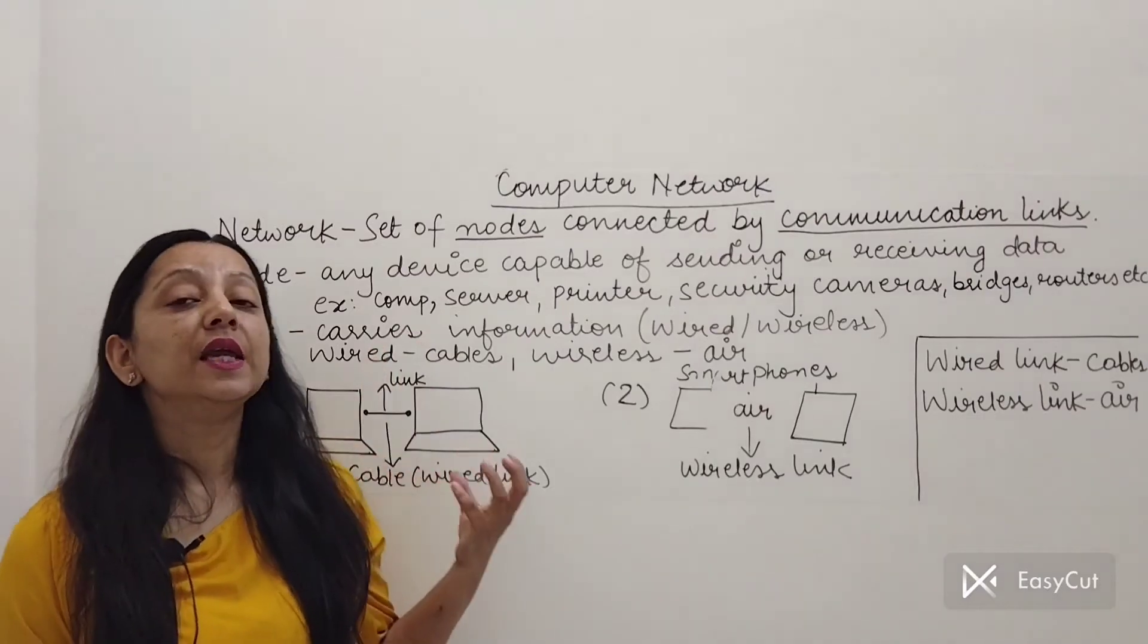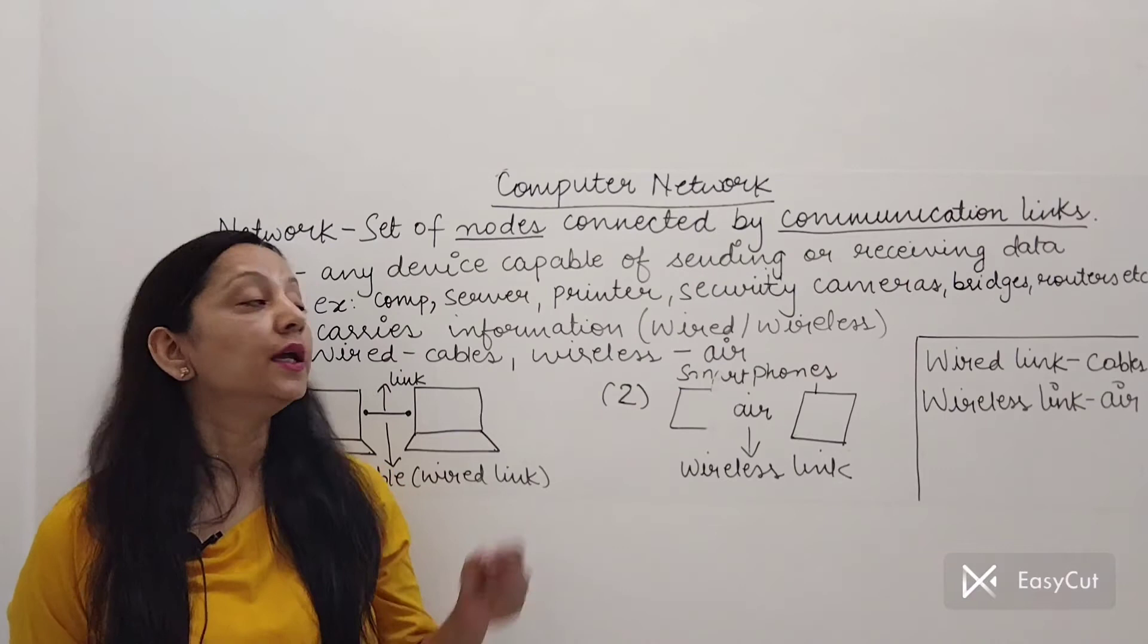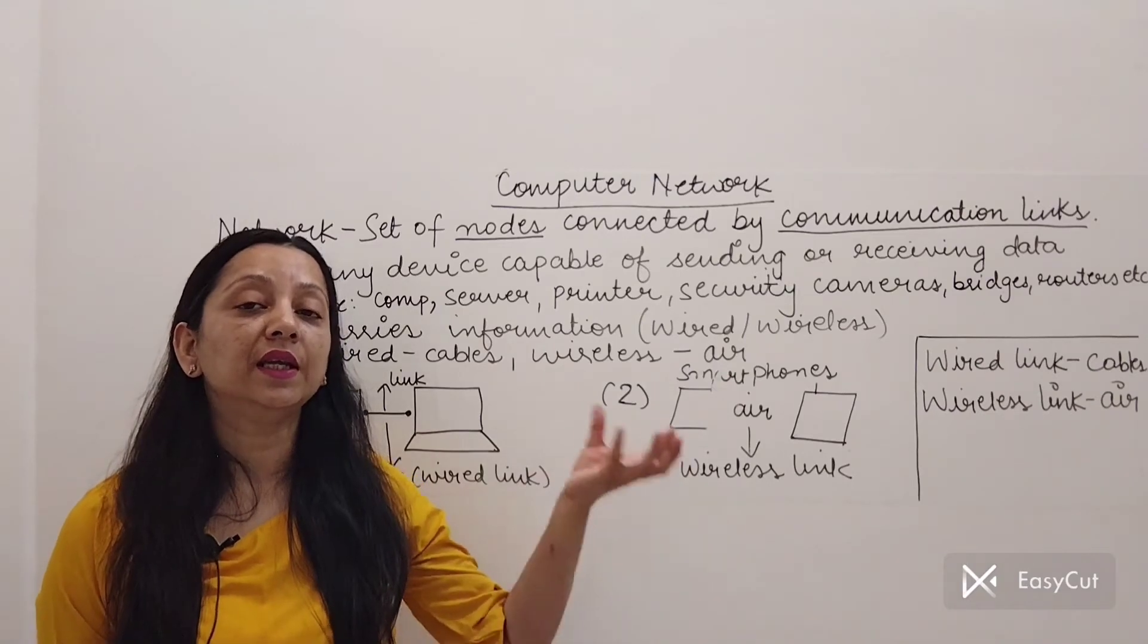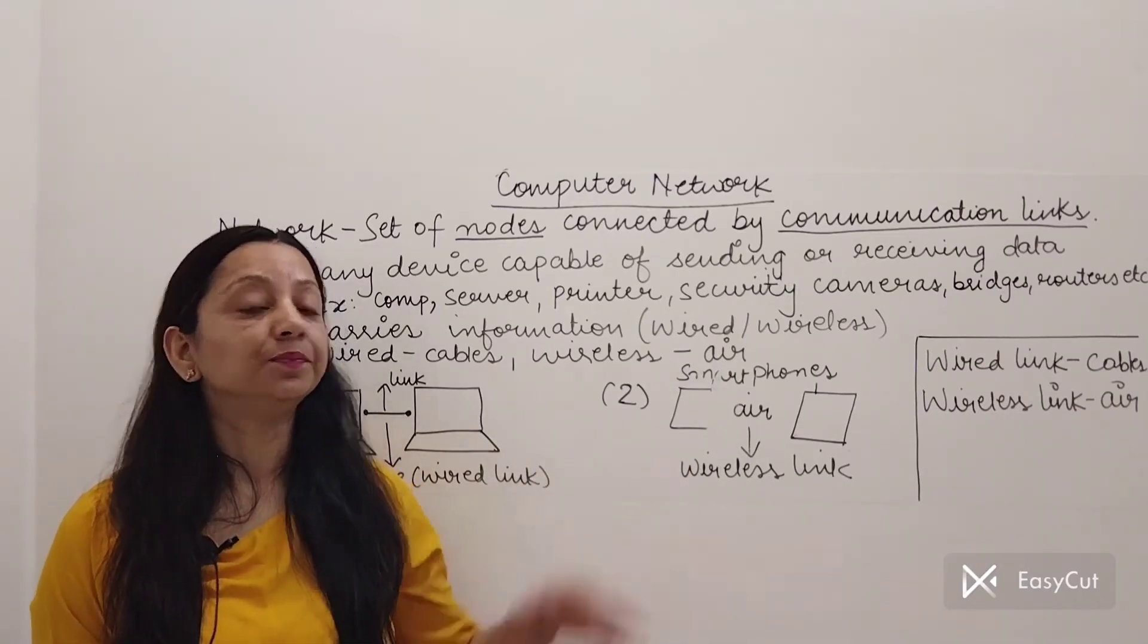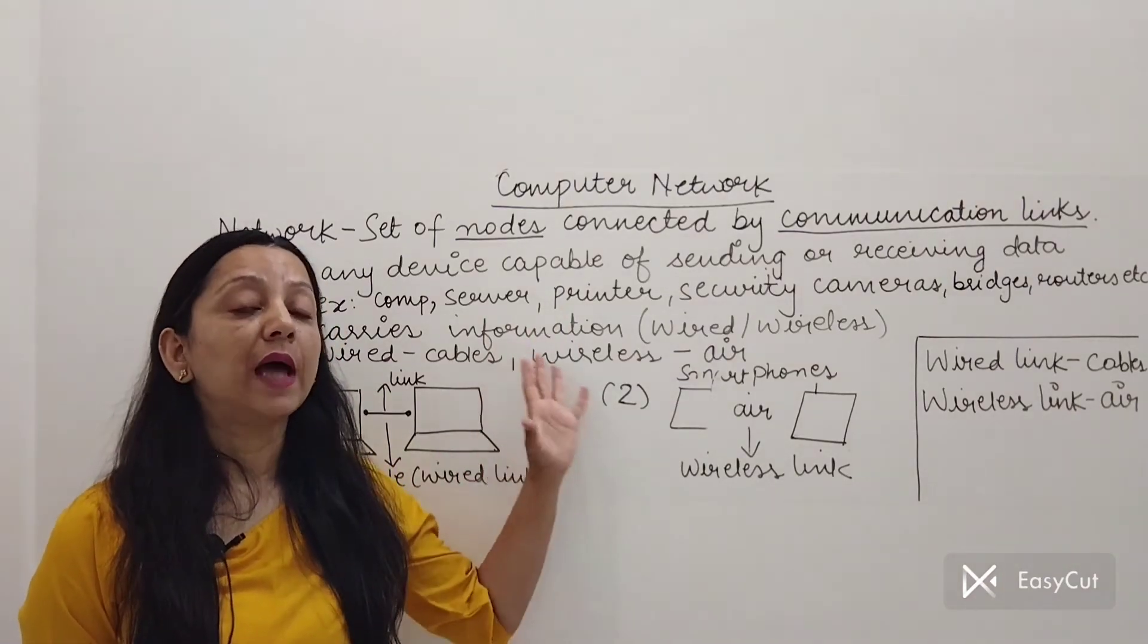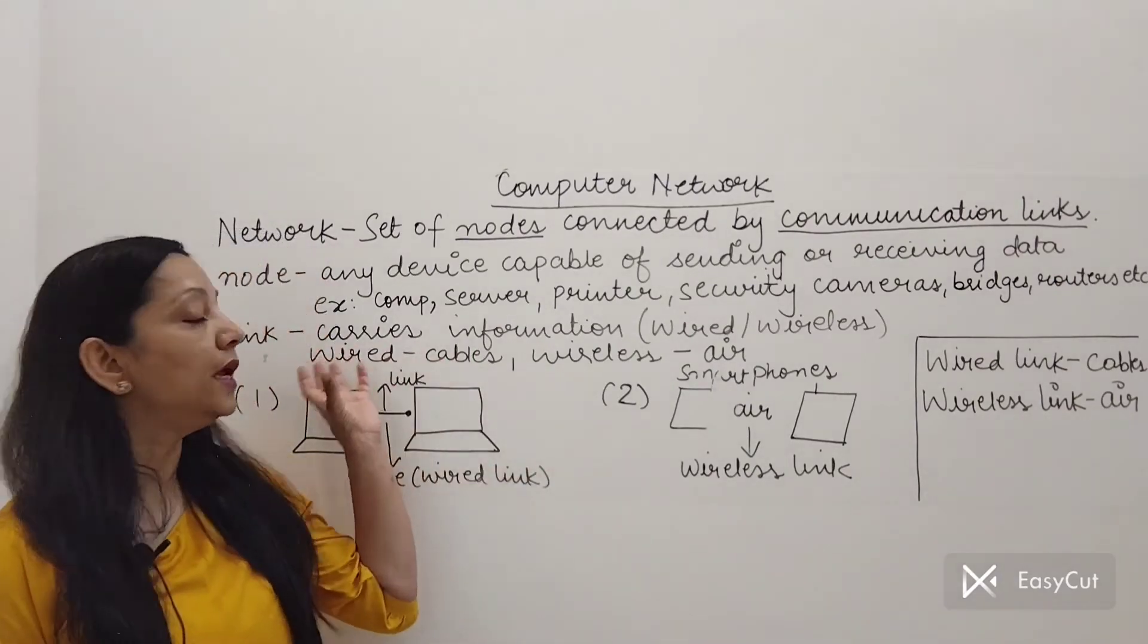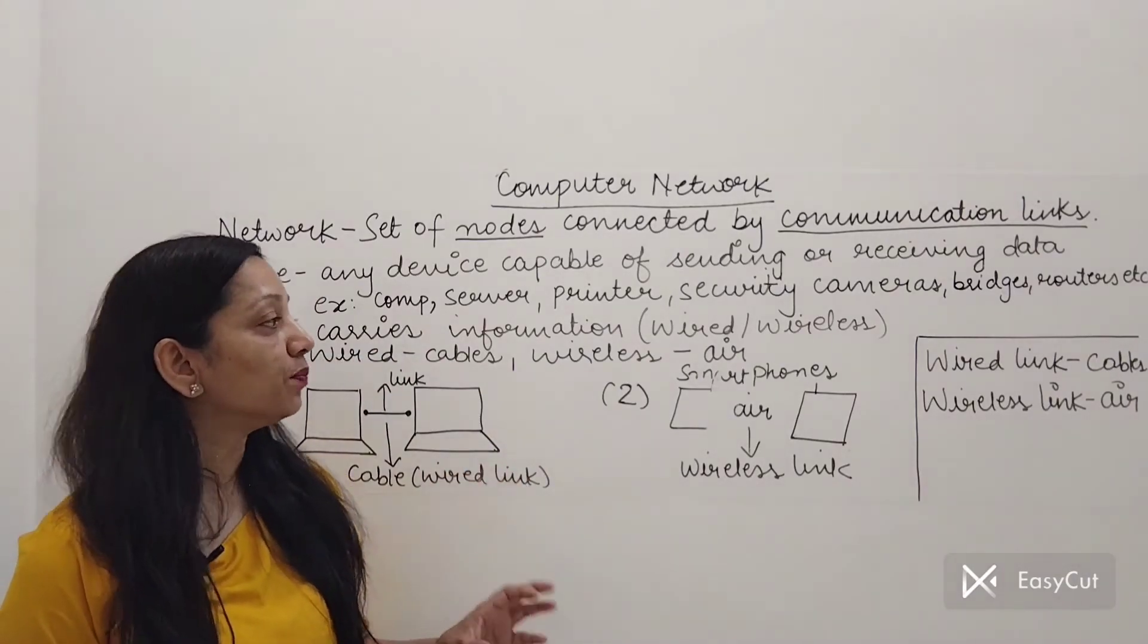Next is your link. Link is basically the carrier of information or it is the communication medium. Now when two parties or two nodes want to communicate they need some medium through which they can communicate. So how would they communicate? That particular medium through which they communicate is known as the link. This is also known as the communication medium.